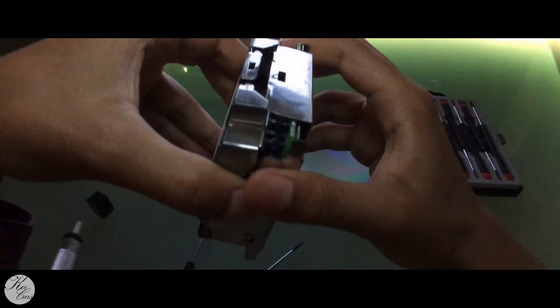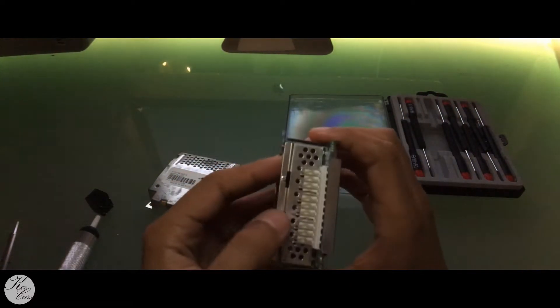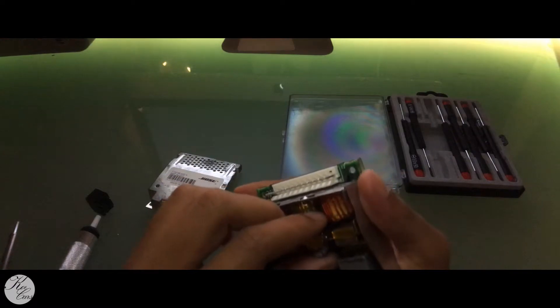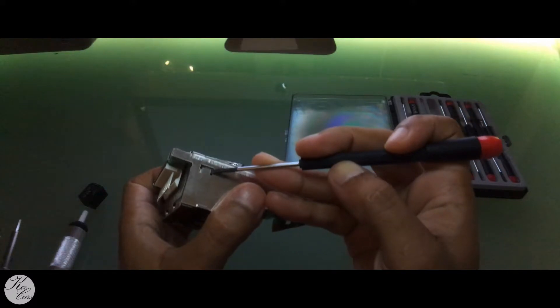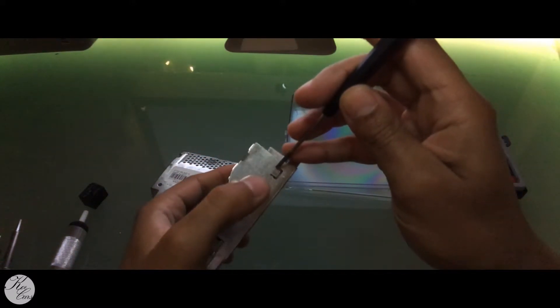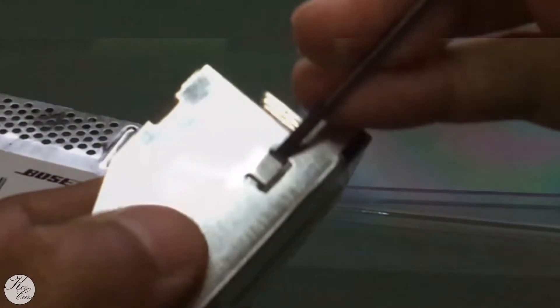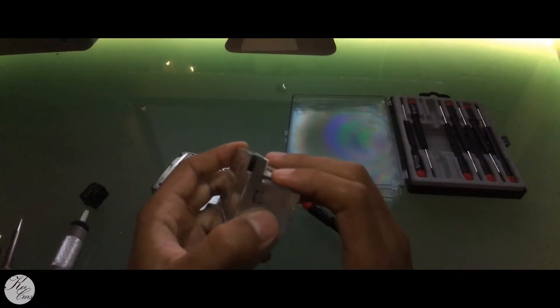Now get a flathead screwdriver and just gently pop this metal clip off. Just lift it from the front just like that and then everything should come loose. Now you have two side clips. Just take your time here, don't go crazy and just pry them just a little bit because this is what is holding the board inside this metal case.